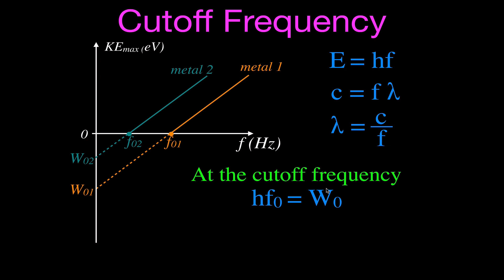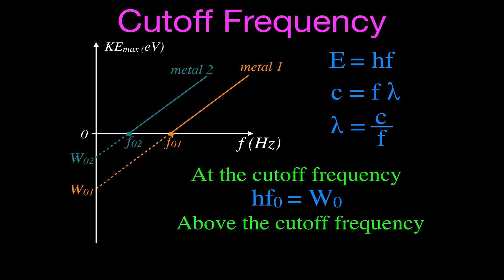Once we go above the cutoff frequency, we get photoelectrons with kinetic energy. Right below the cutoff frequency — no photoelectrons, no photocurrent. At the cutoff frequency — just enough energy to release those electrons, but above it, there's extra energy left over after overcoming the work function. That energy left over is given to the electrons as kinetic energy. You calculate it by taking the energy of the incoming light and subtracting the work function — the remaining energy above the cutoff frequency is the kinetic energy of those electrons. All values should be in the same units, usually electron volts.